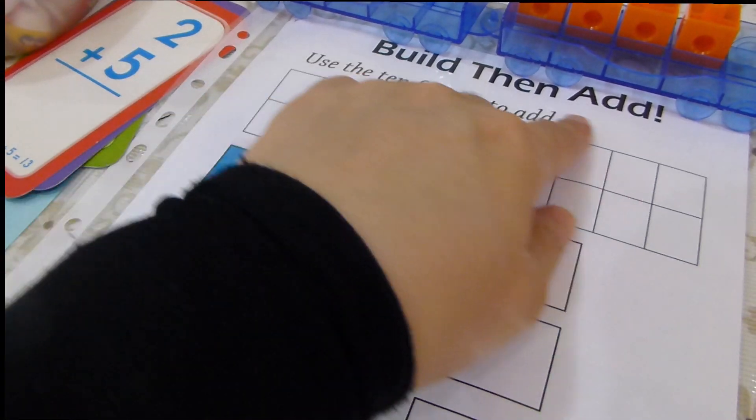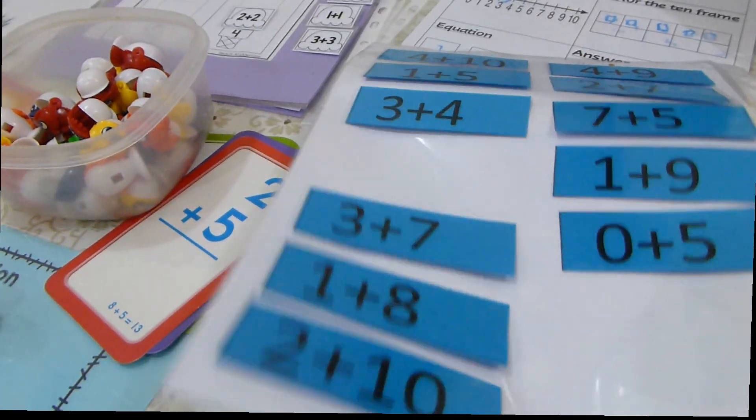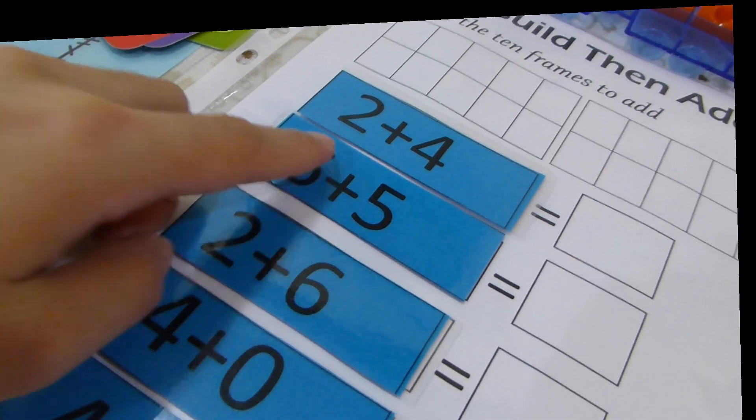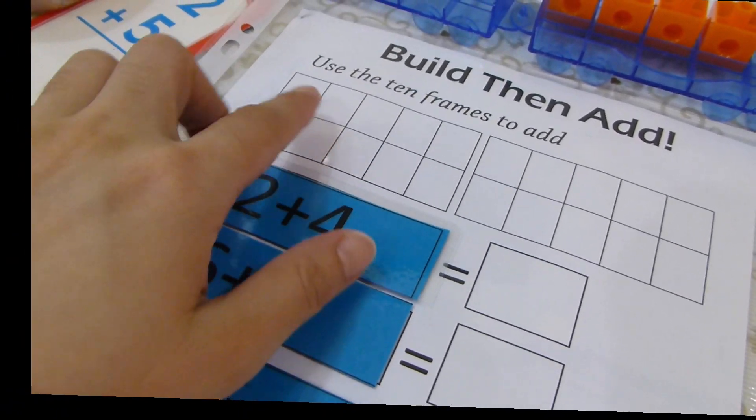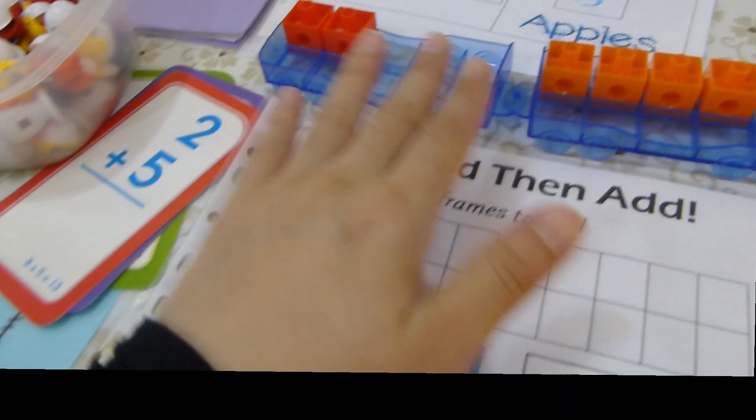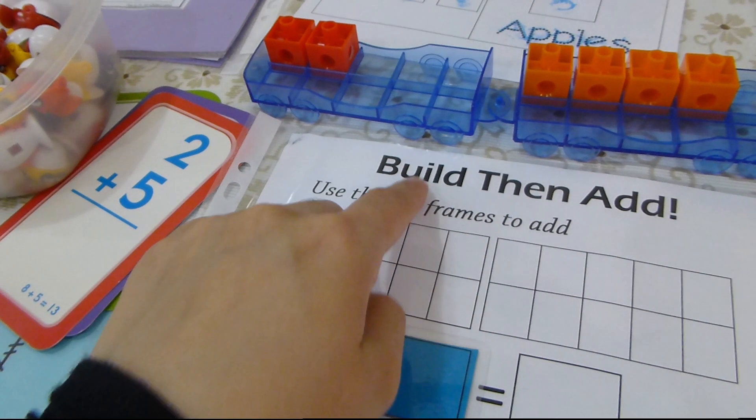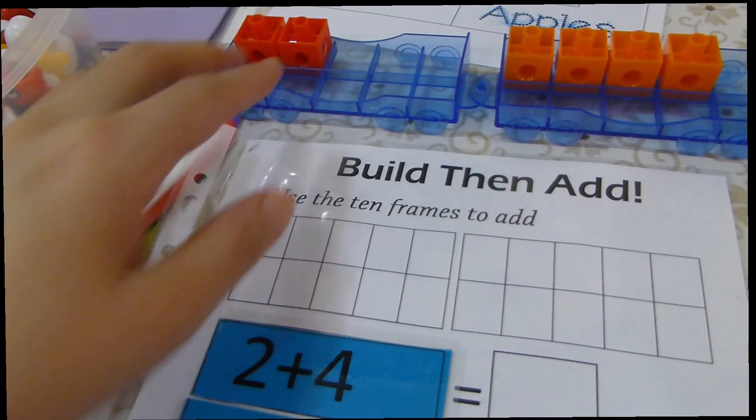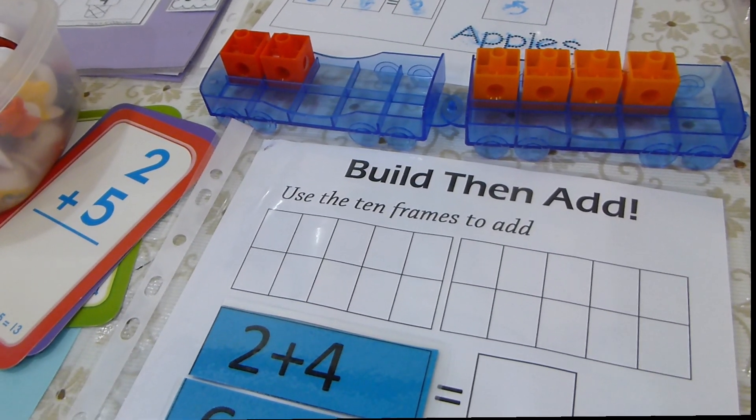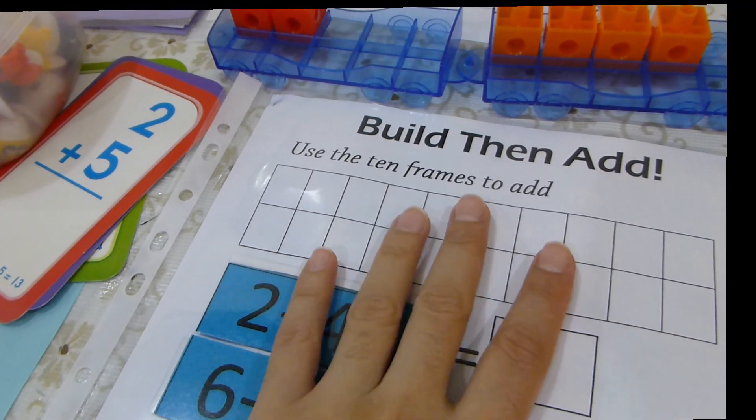The second strategy that we will be talking about today is called build then add. I usually have all the equations that I want them to solve on the back. What they will be asked for is to take the equations and place them here. Then they can use any kind of manipulatives, the small manipulatives, to represent the equation on the 10 frames. I made the first one for you as an example. This is 2 plus 4 and then they will write 6 over here. They can use play-doh or small objects to represent it on the 10 frames.